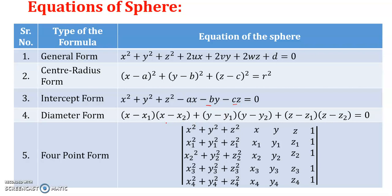The equation of a sphere in diameter form is given by (x − x₁)(x − x₂) + (y − y₁)(y − y₂) + (z − z₁)(z − z₂) = 0, where (x₁, y₁, z₁) and (x₂, y₂, z₂) are the two endpoints which form the diameter when joined.